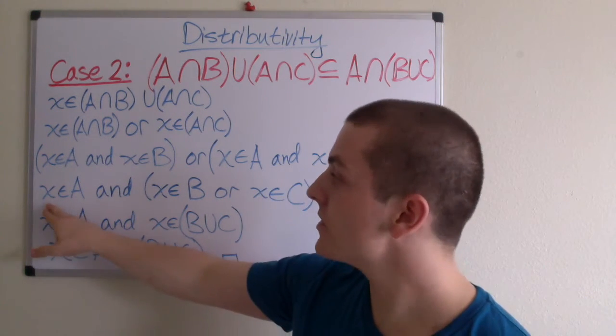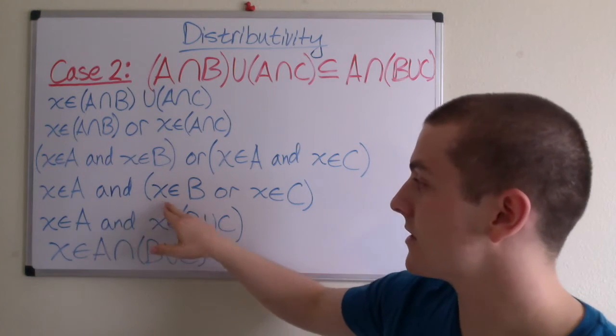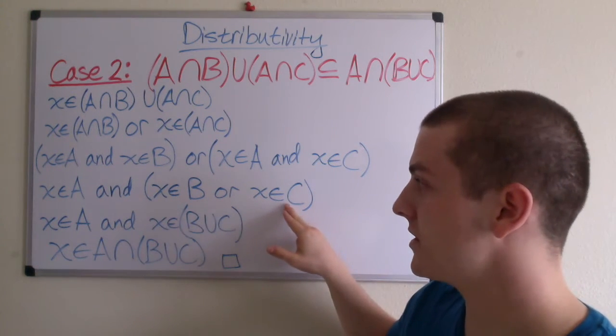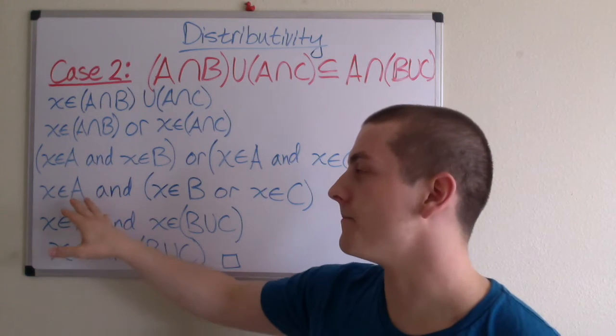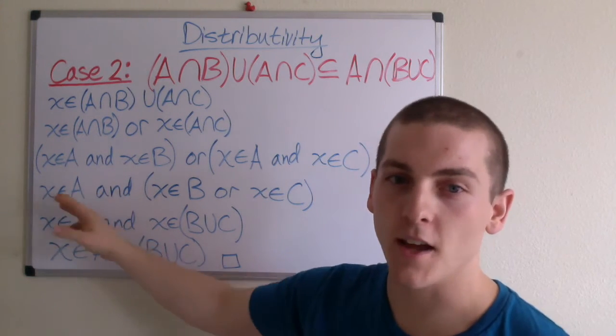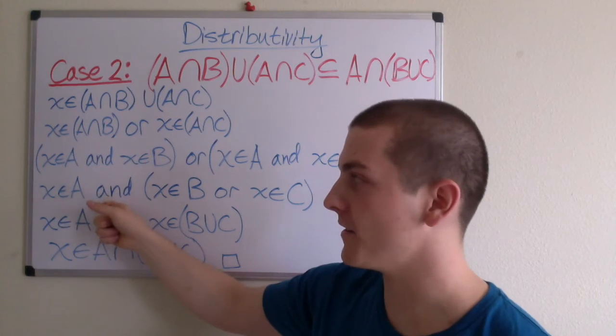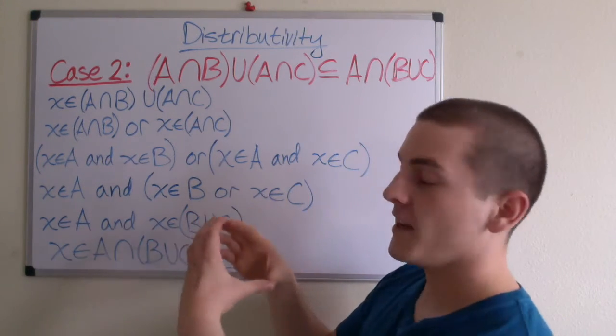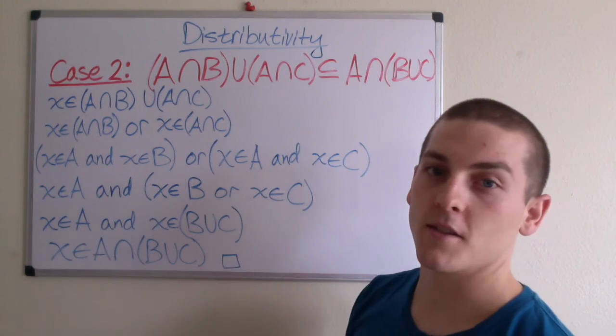From that, we can deduce that X is an element of A and X is an element of B or X is an element of C. And here, we sort of factored out the X is an element of A and then regrouped X is an element of B or X is an element of C.